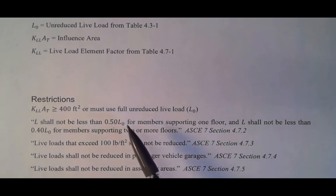This next aspect here basically says you can't go too low. So for instance, if you have a member supporting one floor, then the lowest you can go is 0.5 L₀, and if it's supporting two or more floors, then you can go down to 0.4. So in other words, for a beam typically you can't go any less than 50% of the initial load. For a column that supports two or more floors, you can go down to 40% but no lower.